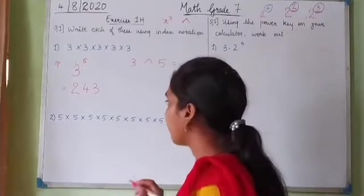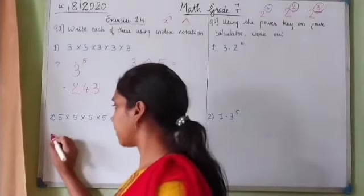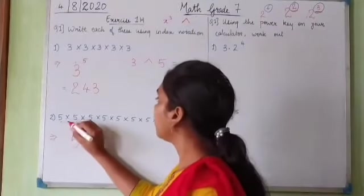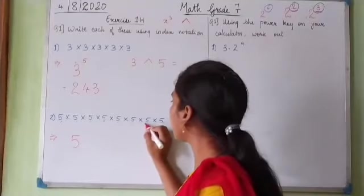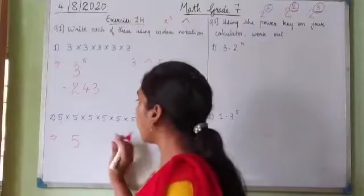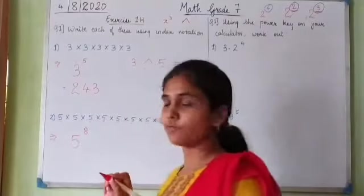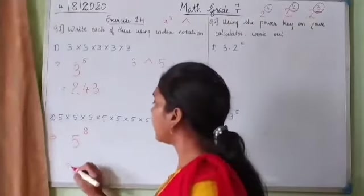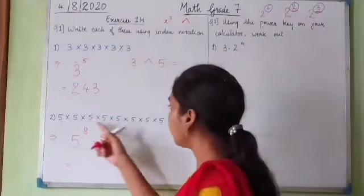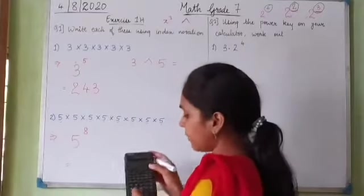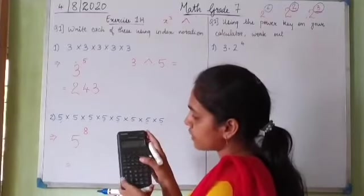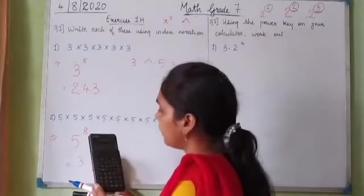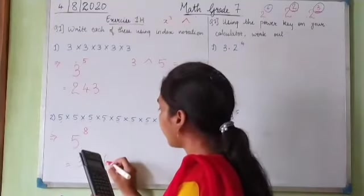In the second example, the number 5 is getting multiplied. Let's count: 1, 2, 3, 4, 5, 6, 7, 8 — it is getting multiplied 8 times. So 5 raised to 8. Press 5, then raised-to, then 8, then equals. The answer is 390625.